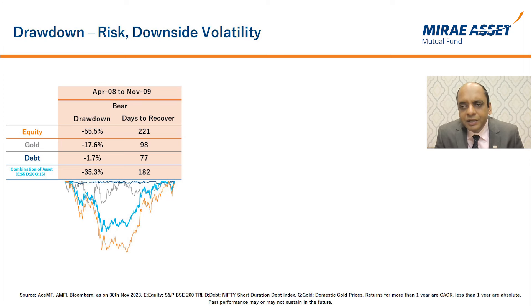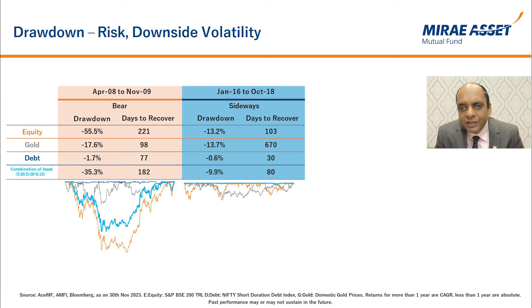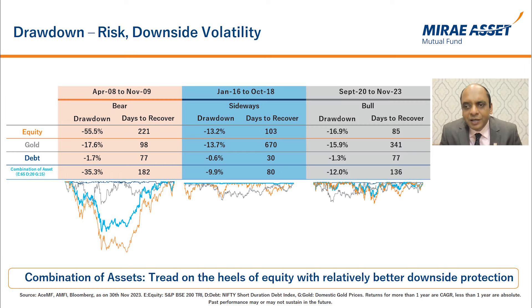It's also important to understand the magnitude of downside risk or drawdown and the number of days taken to recover. During bear phases, equity corrected the most followed by gold, while debt gave the least negative returns. Equity took the longest time to recover — 221 days during the April 2008 to November 2009 bear period. During sideways phases, gold took as long as 670 days to recover compared to equity which took only 103 days. The combination of these asset classes witnessed lower downside and recovered faster compared to equities.